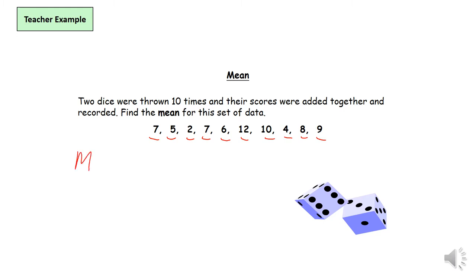So to find the mean, the mean equals the sum of all scores divided by number of scores. Okay, to find the sum of all the scores, what that means is we're gonna add up all the scores. So that'll be seven